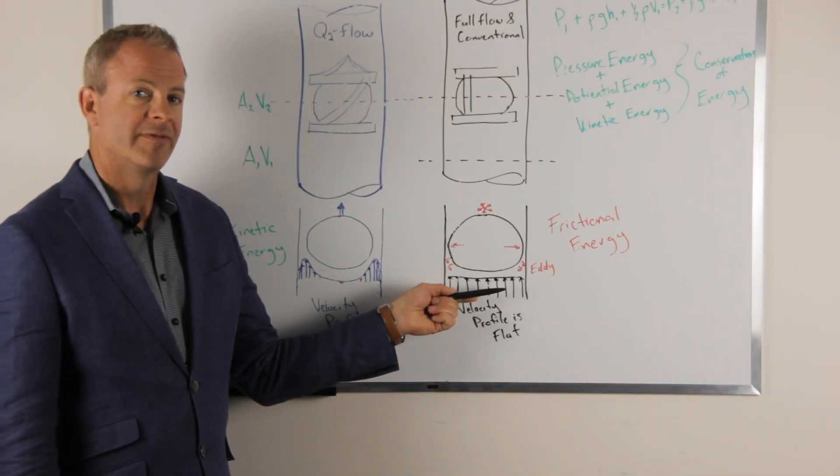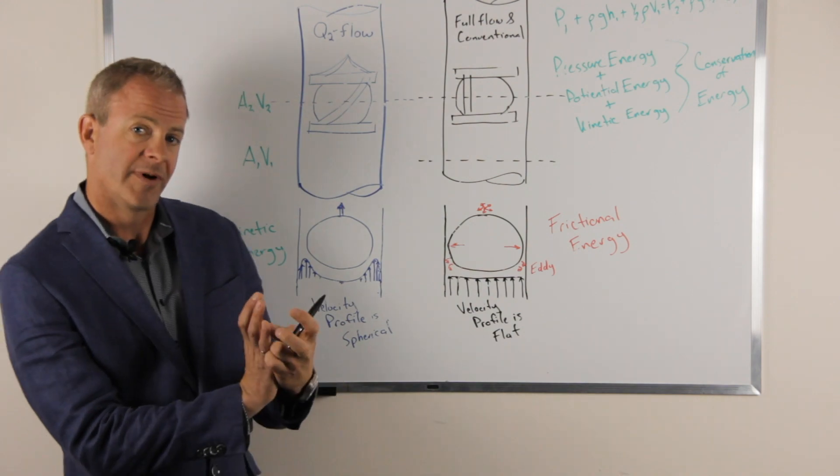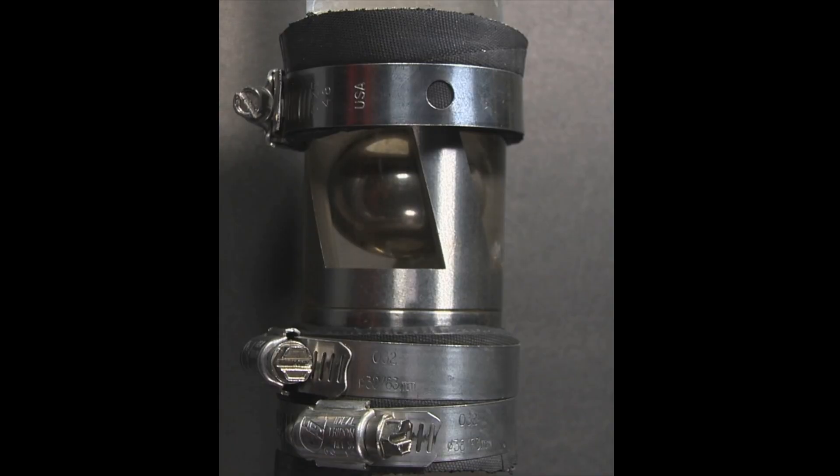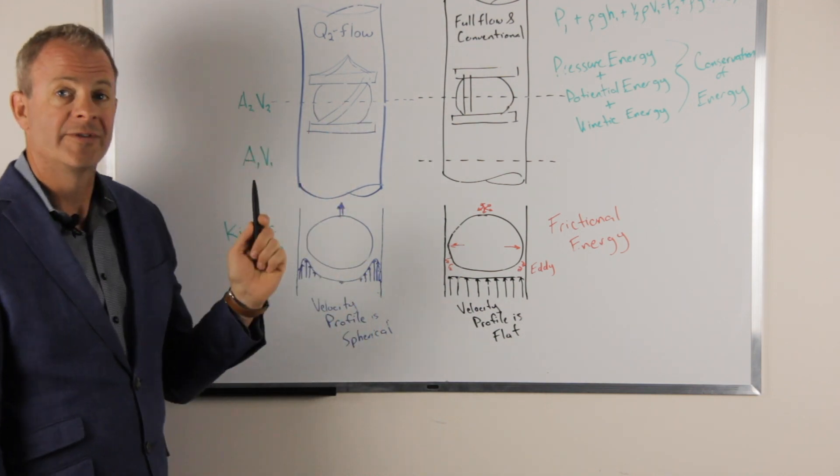Instead of a flat velocity profile, Q2 flow has a spherical velocity profile that cups that ball and holds it in place while maximizing the velocity profile in the smallest cross-sectional area of your pump.